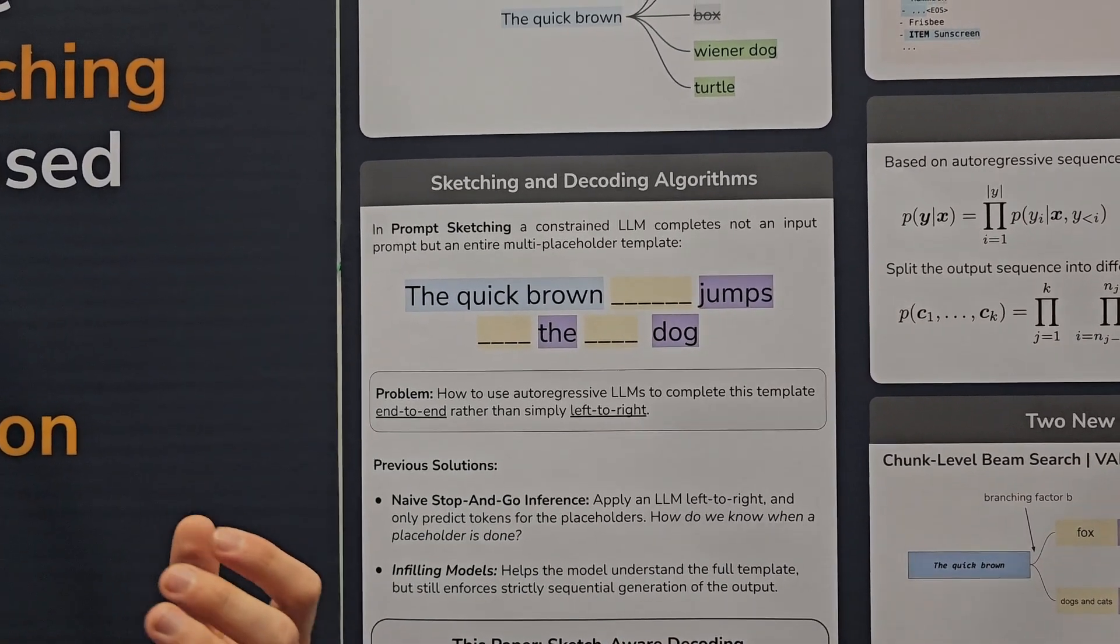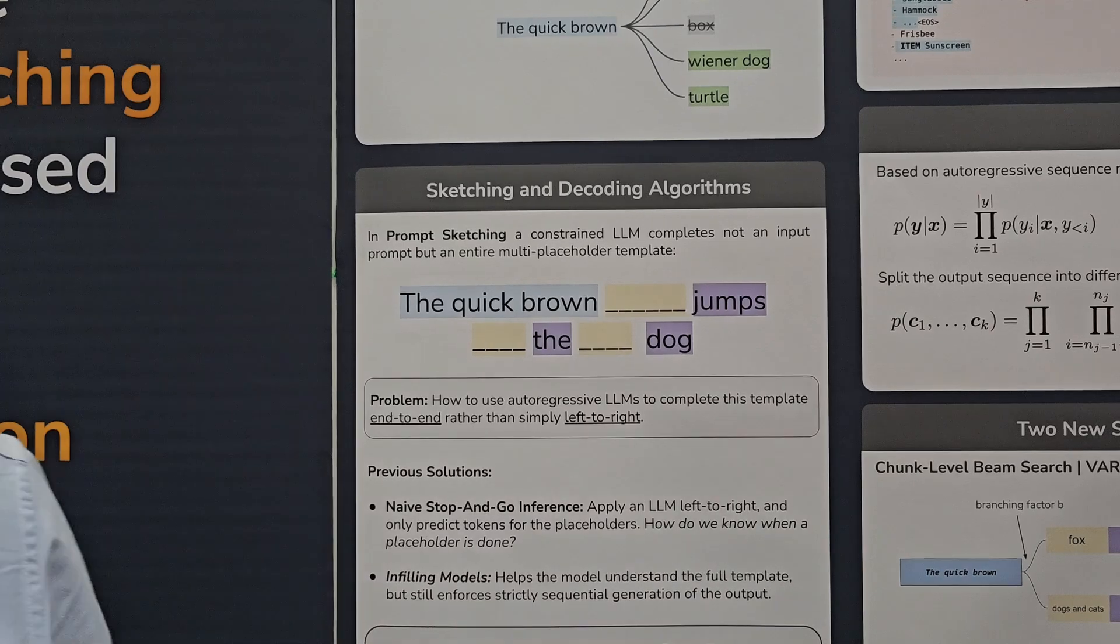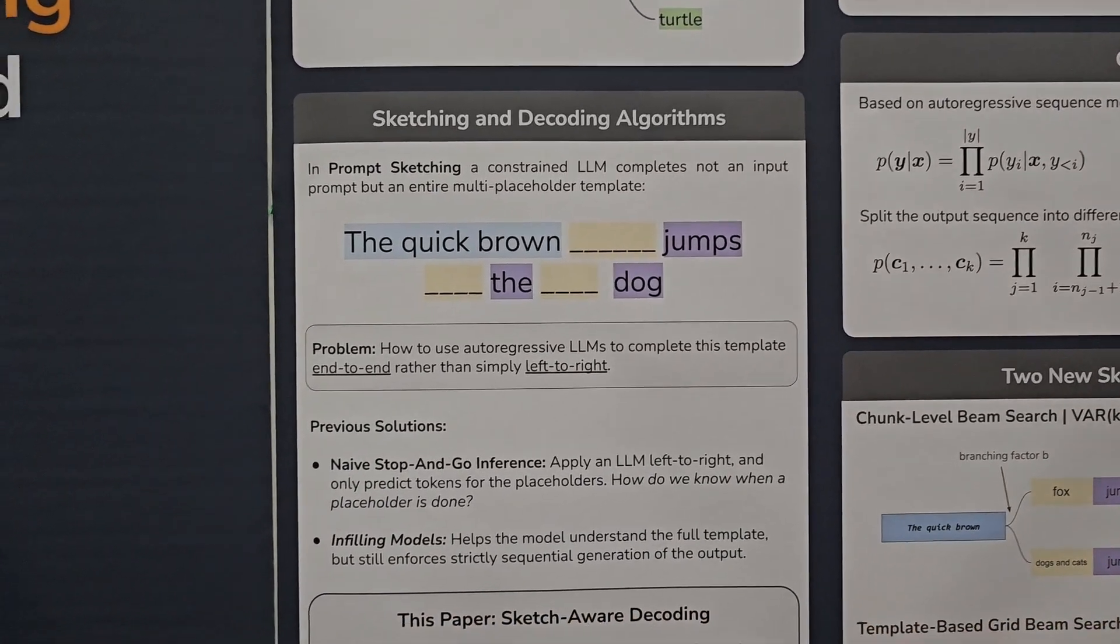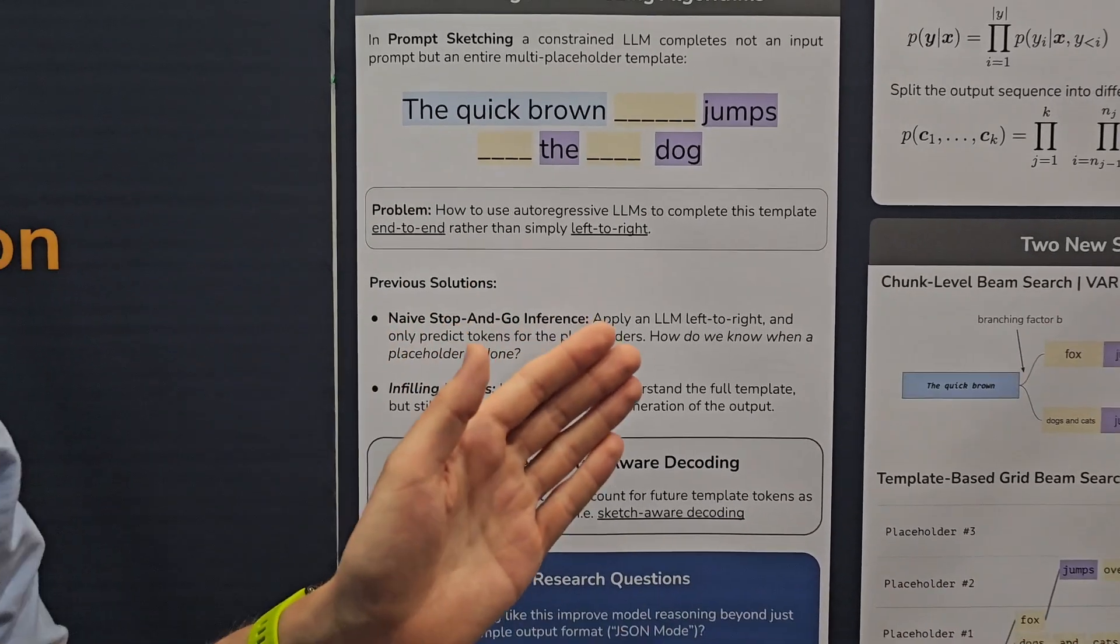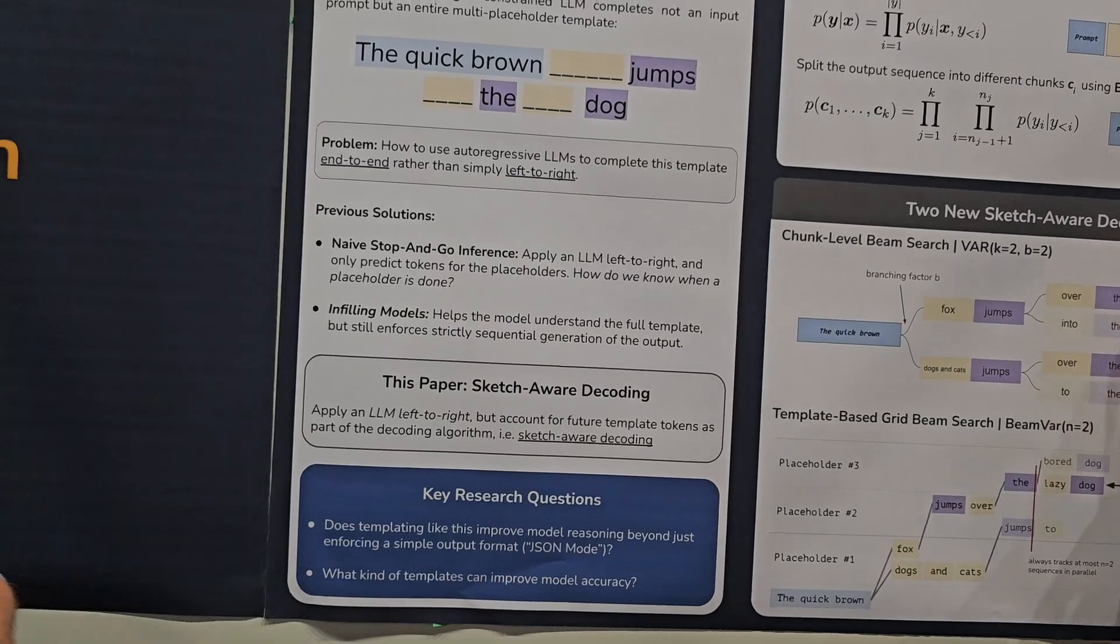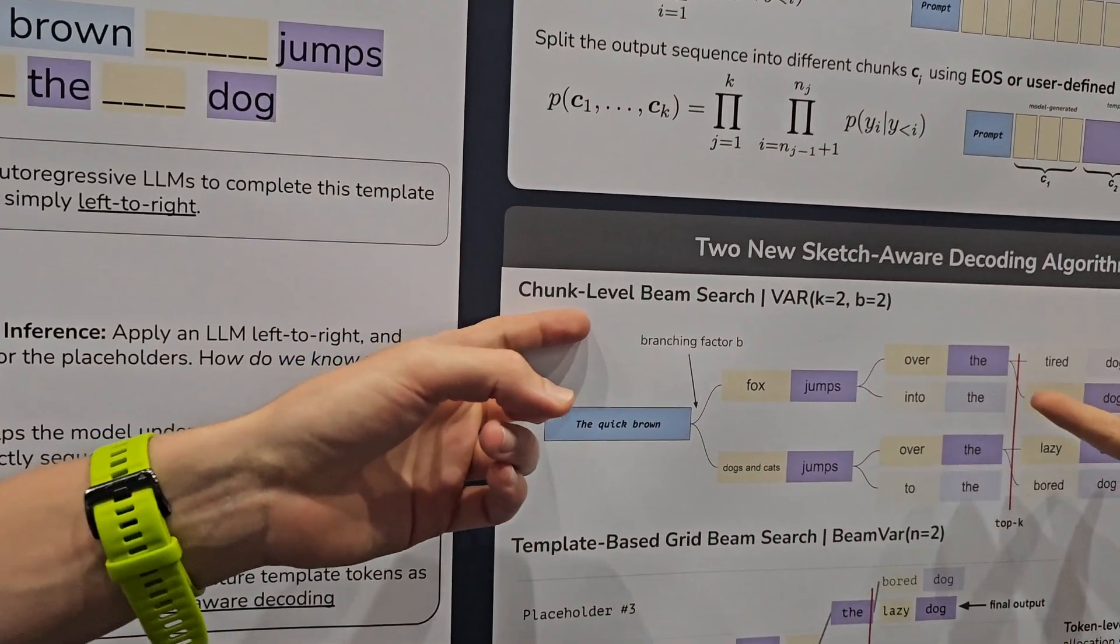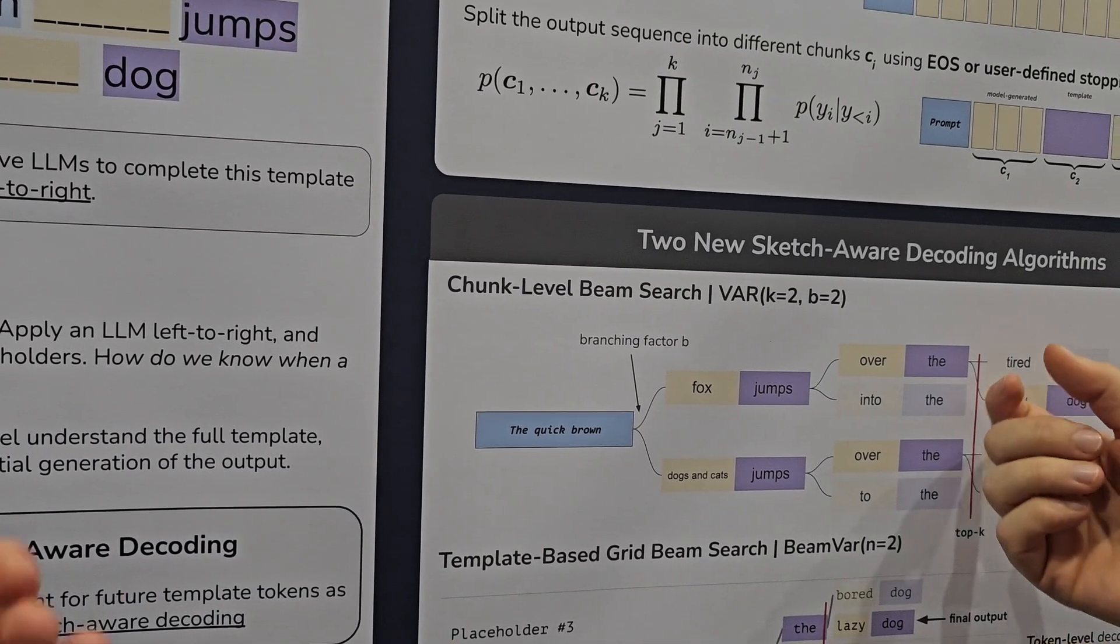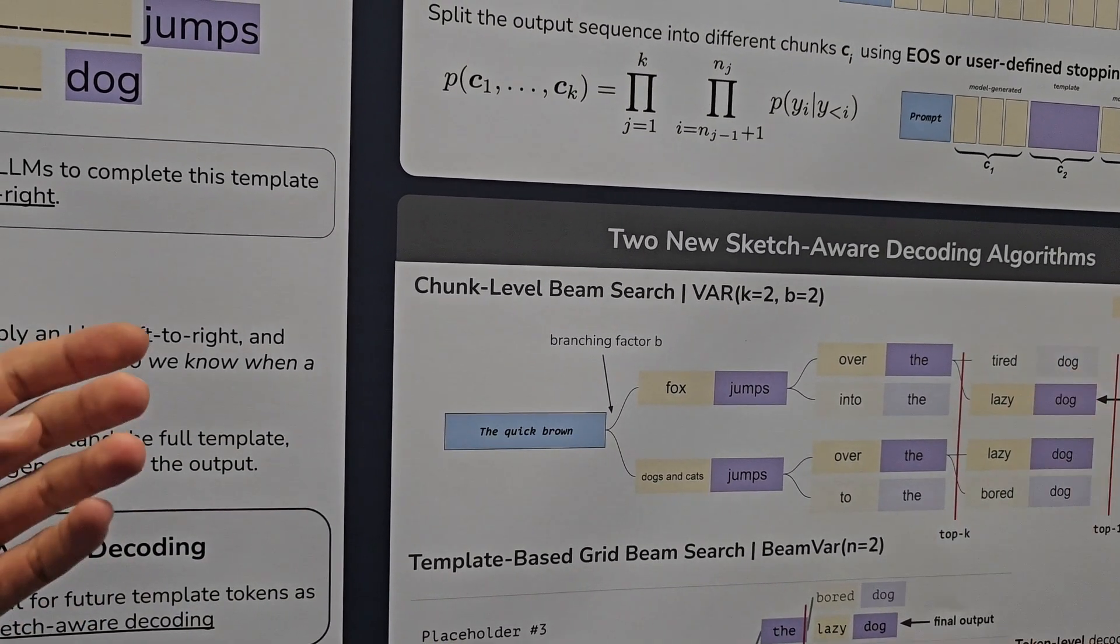So what we do instead is we propose so-called sketch-aware decoders, which change the decoding process to approximately optimize posterior probability. And if we focus here on this chunk-level beam search, we do this by doing beam search on two levels. We first do beam search on a token level for each chunk individually.